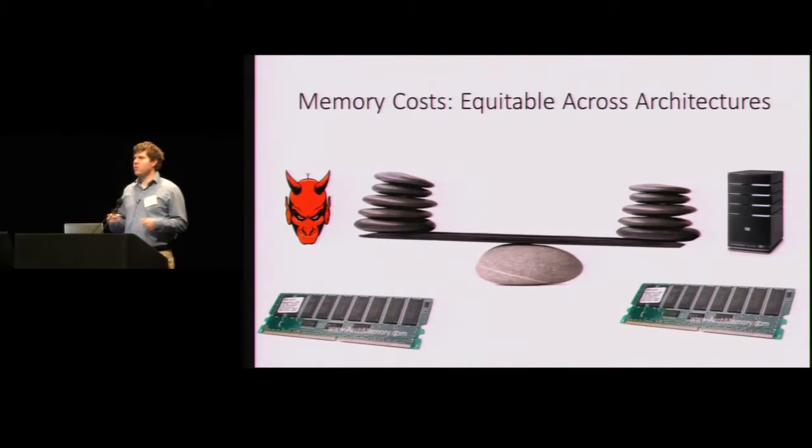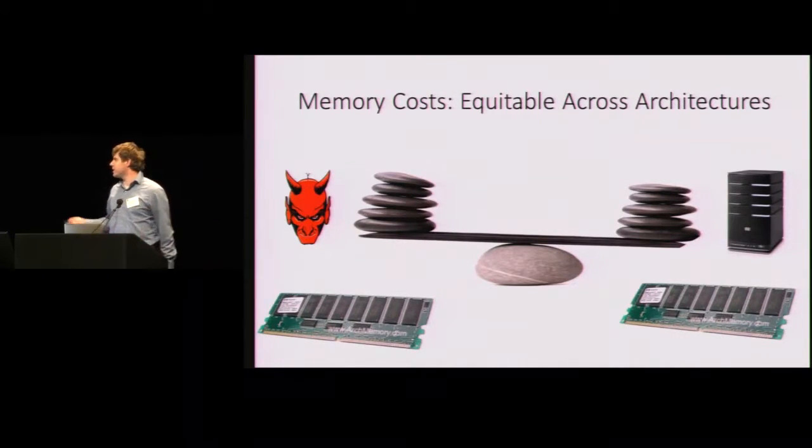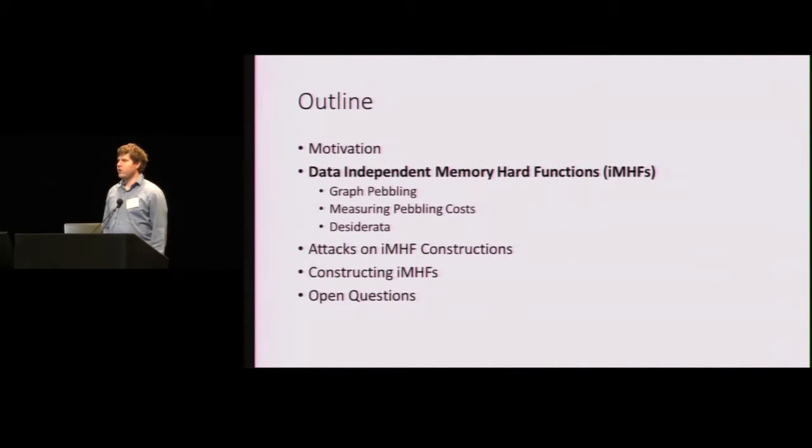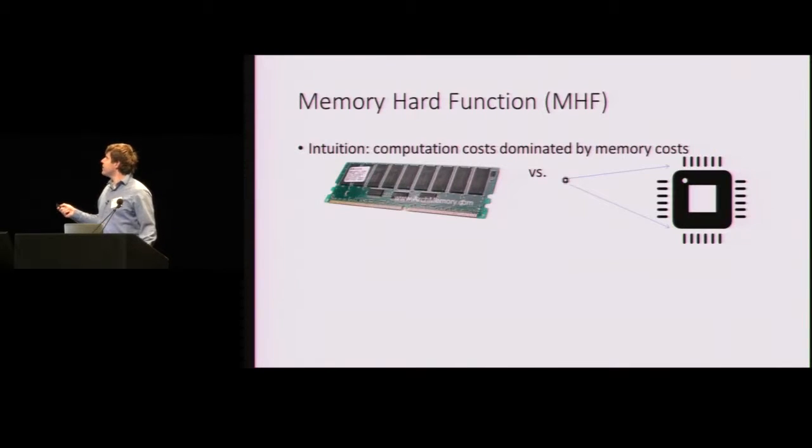So one of the promising techniques to achieve both goals is memory hard functions. In particular, memory costs tend to be equitable across different architectures. The cost of building in a gigabyte of RAM on an ASIC is not dramatically lower than the cost of just purchasing a gigabyte of RAM for your personal computer. Let me now introduce data independent memory hard functions. First, let's talk about memory hard functions.